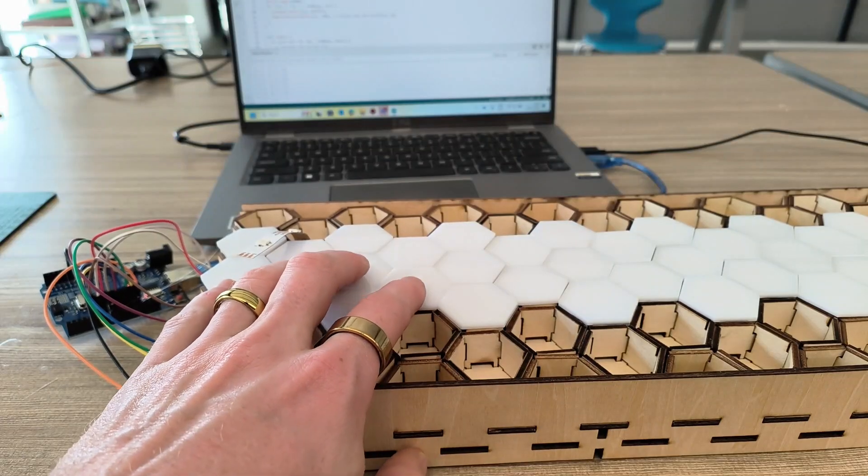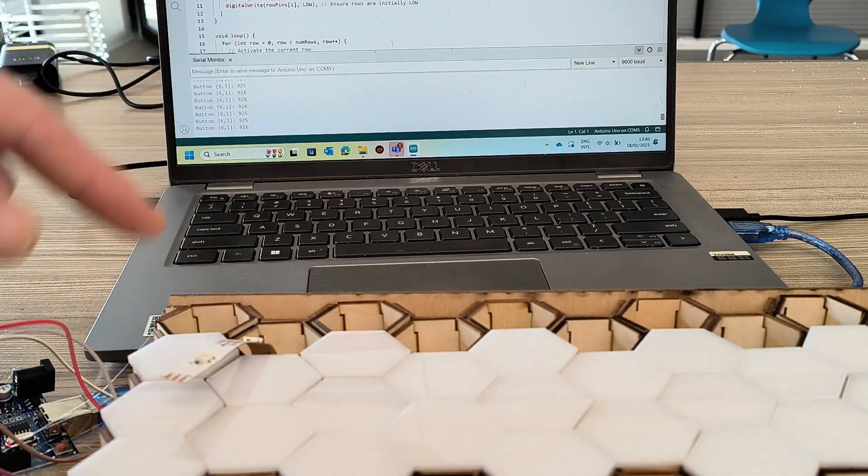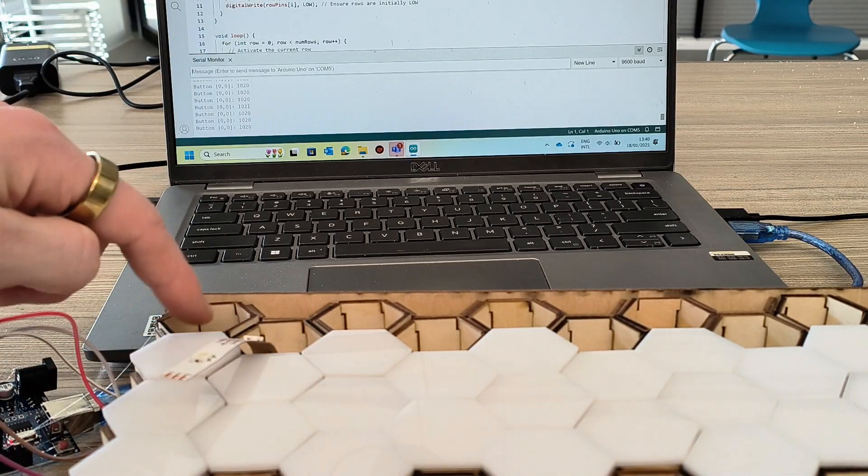And there we go. I'm just testing the buttons here. And you can see on the computer that it can determine which row and column is pressed.